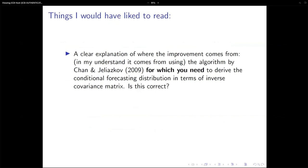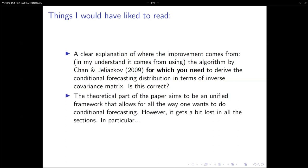I really like the paper — it's very elegant and very general, covering all the different specifications. However, I was a bit lost in understanding where exactly the contribution comes from. My understanding is that it comes from applying two algorithms: Chan-Jeliazkov (2009) and Botev (2017) for soft constraints. But it was difficult for me to understand what I need to do in order to run this algorithm — specifically, do I need to derive the conditional forecast distribution in terms of the inverse covariance matrix, and is that the only thing I need to do? Also, moving between the different hard/soft, observable/shock declinations of the model could be made more fluid.